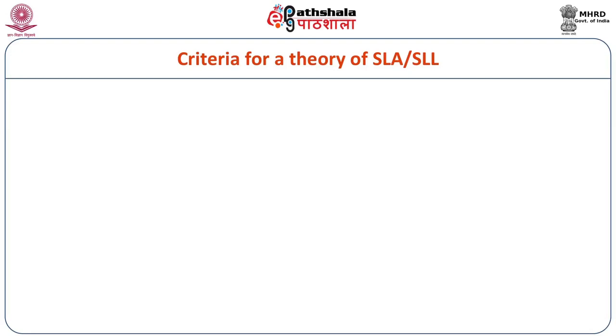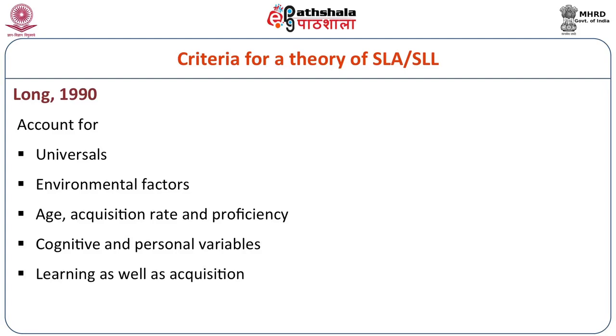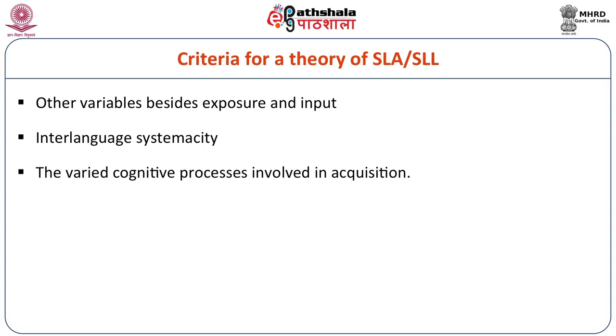There is a criterion for a theory of second language acquisition according to Long, propounded in 1990. It accounts for universals, environmental factors, age, acquisition rate and proficiency, cognitive and personal variables, learning as well as acquisition, other variables besides exposure and input, interlanguage systematology, and the varied cognitive processes involved in acquisition. All these points are very important and have their specific role — whether it is age, capability, situation, or demand — in second language acquisition.